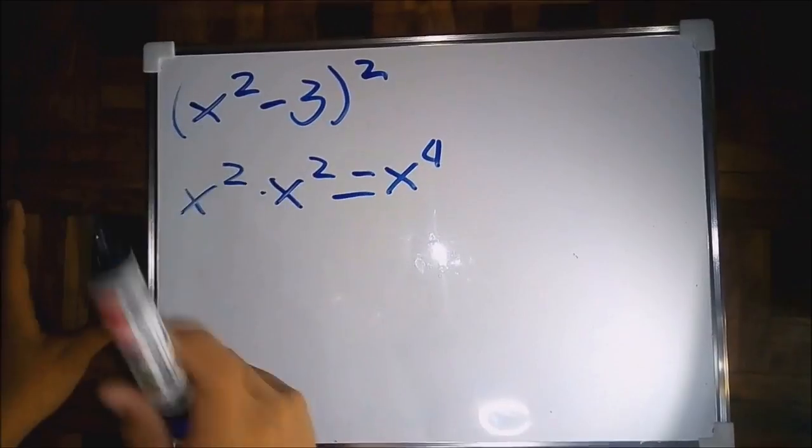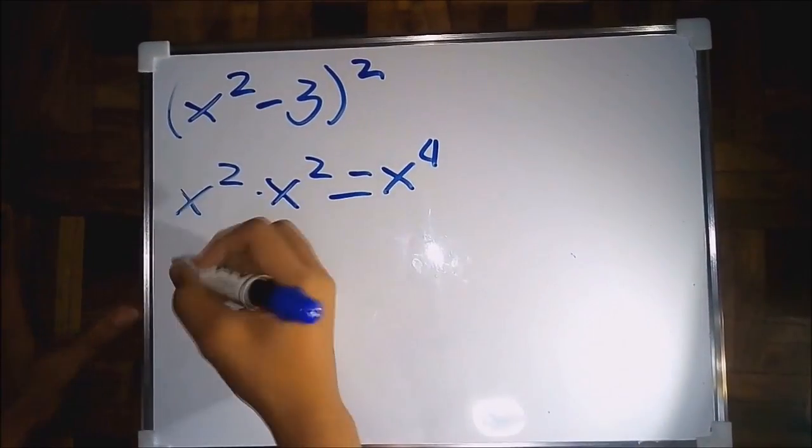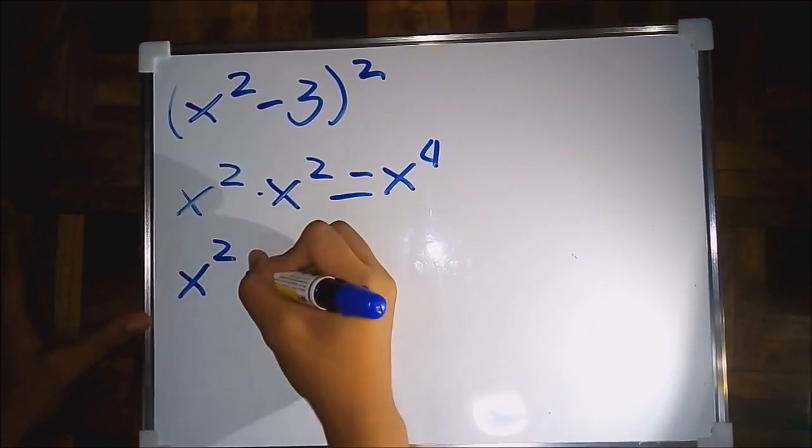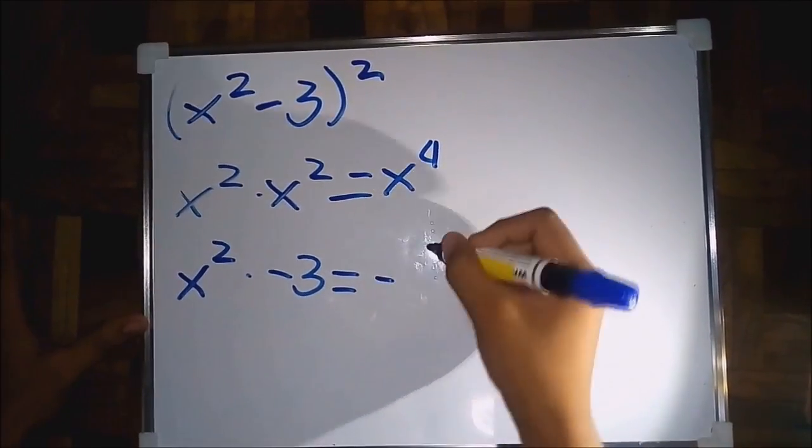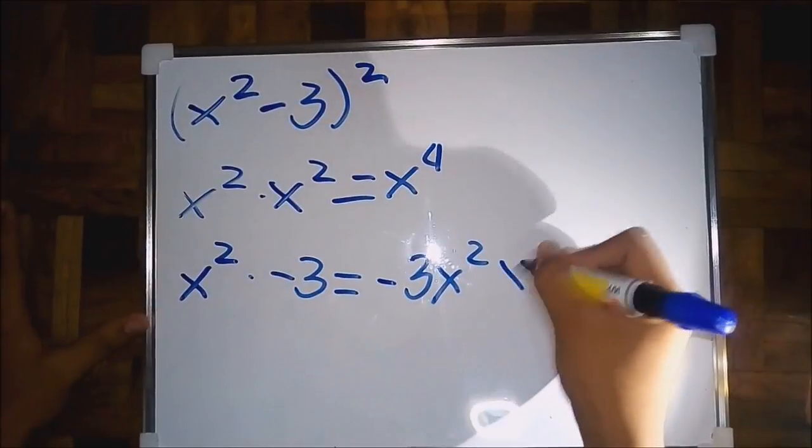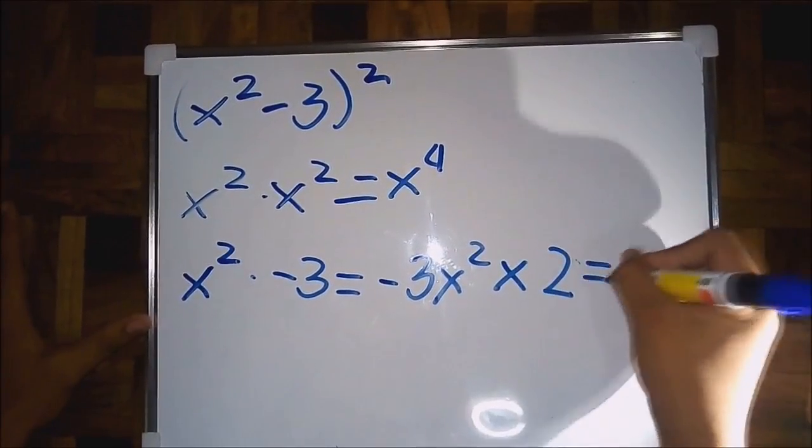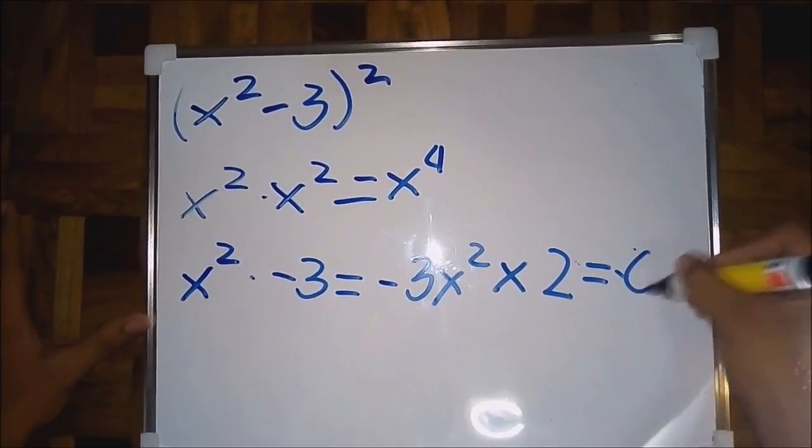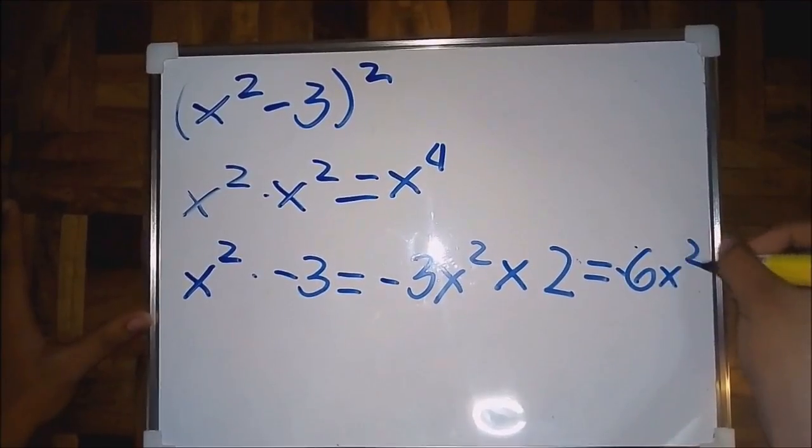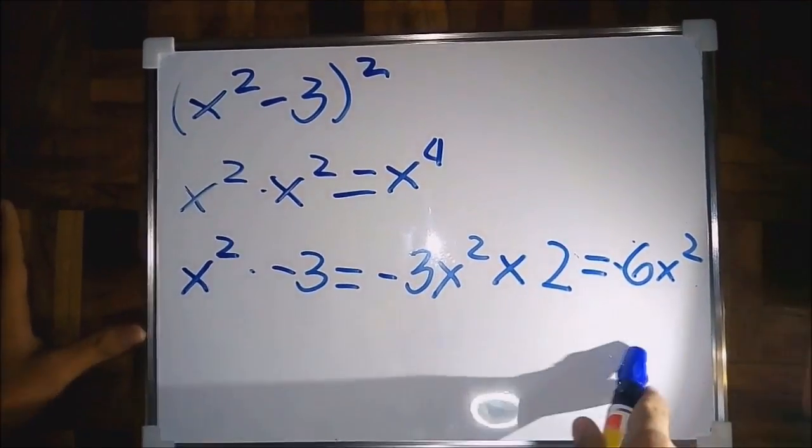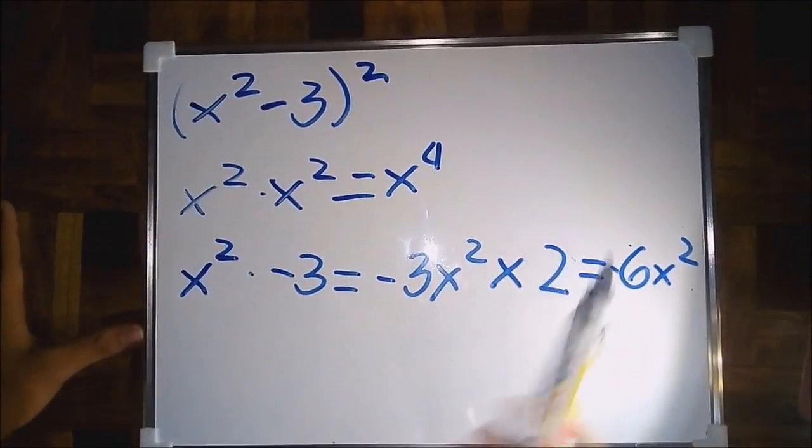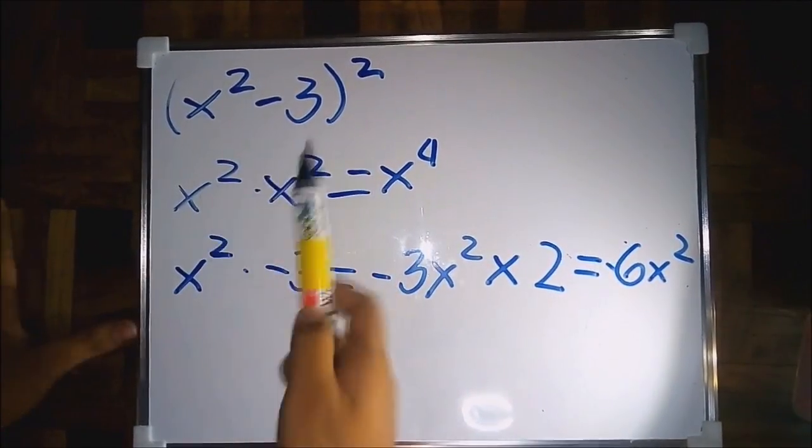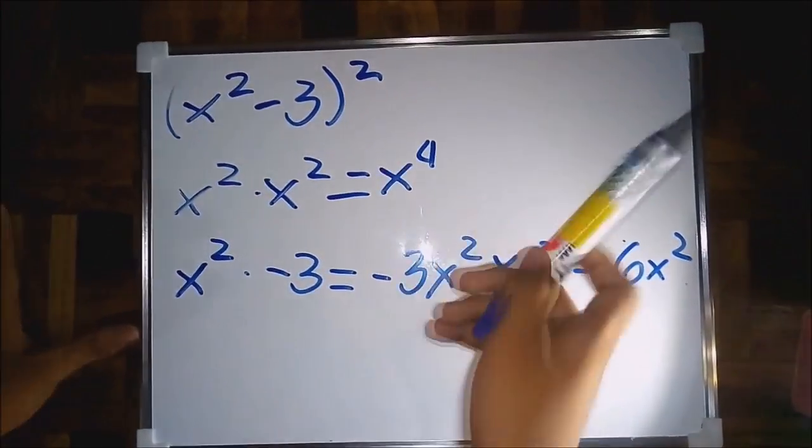The answer is negative 6x squared. The last step is let us multiply the last term, which is negative 3, by itself.